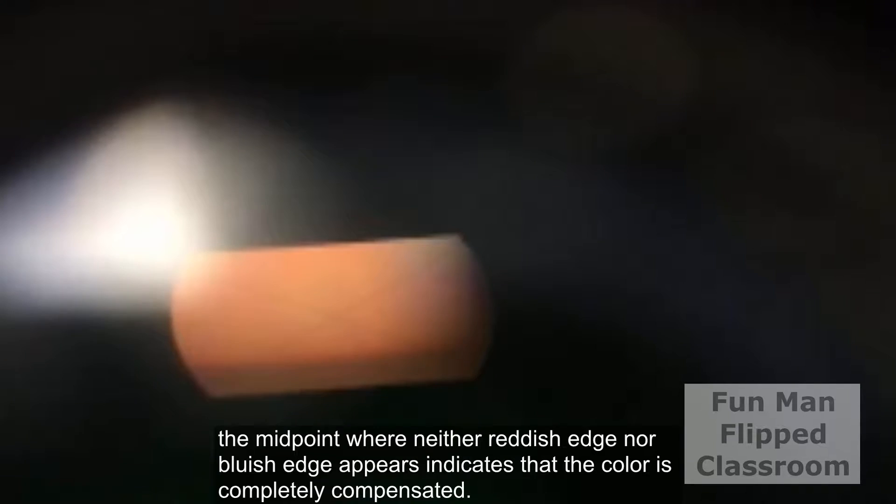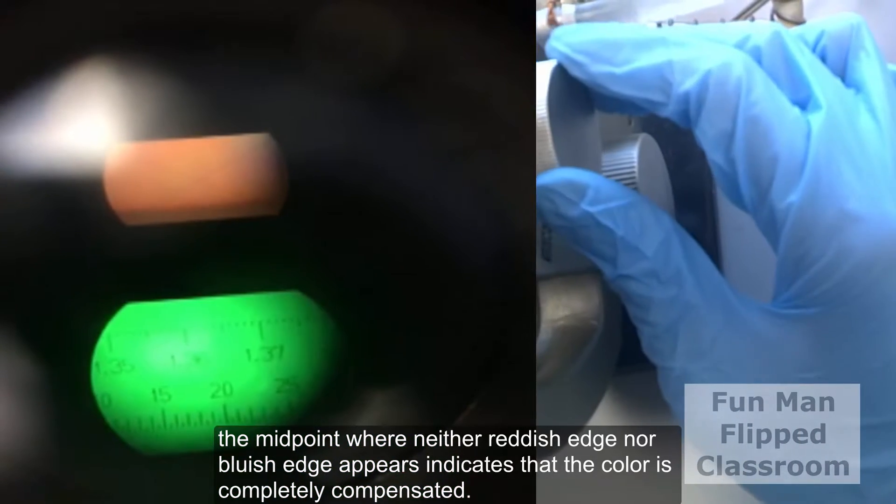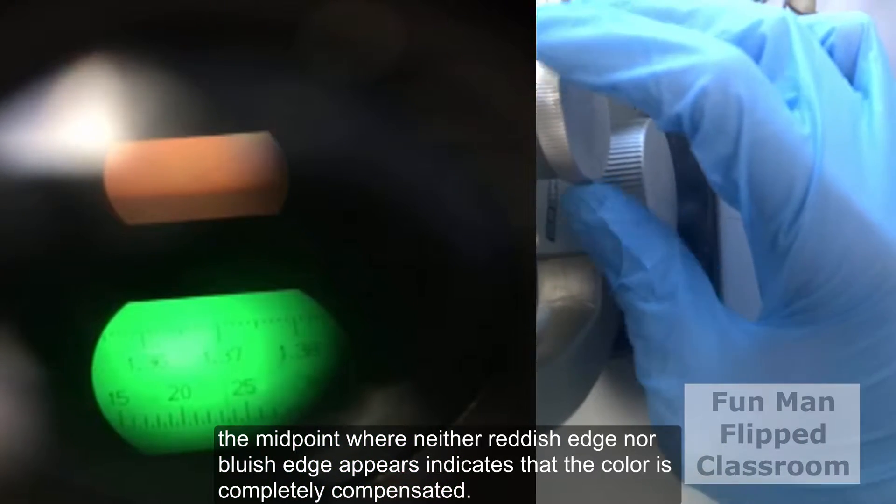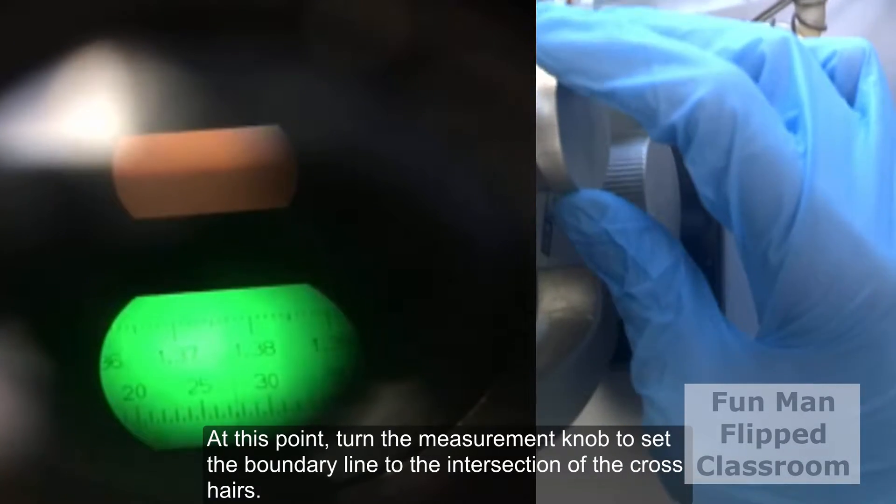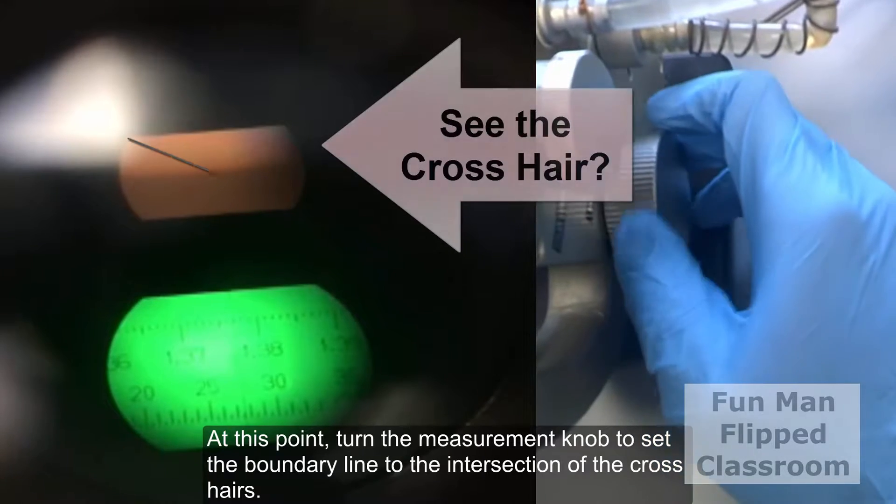The midpoint, when neither reddish edge nor bluish edge appears, indicates that the color is completely compensated. At this point, turn the measurement knob to set the boundary line to the intersection of the crosshairs.